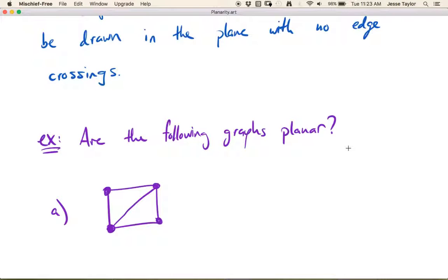Are the following graphs planar? Here we have a graph with 4 vertices and 5 edges. There are no edge crossings in this one, so we can just see immediately, yes, this is planar.